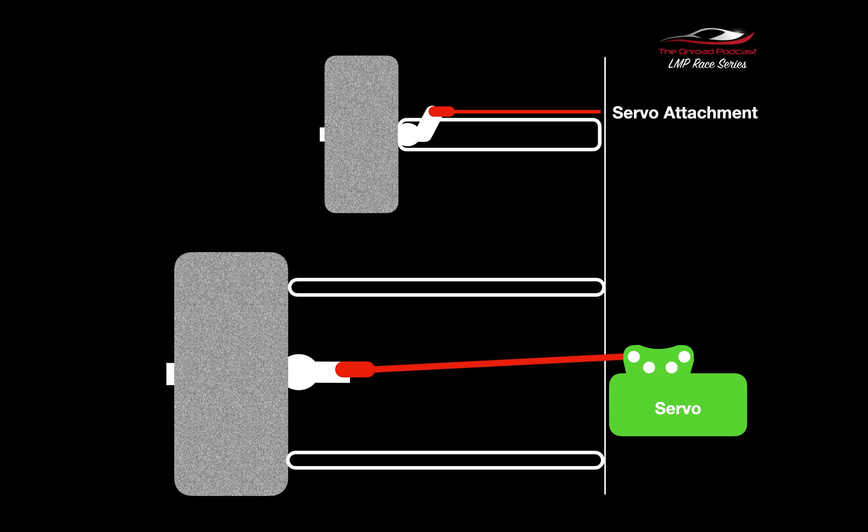When we then move the servo up, in this case, which has now created an angle on the turnbuckle, it's going to have an effect on the wheels which I'll come on to in a moment. You can see that the turnbuckle is no longer parallel to the top arm and obviously to the bottom arm.